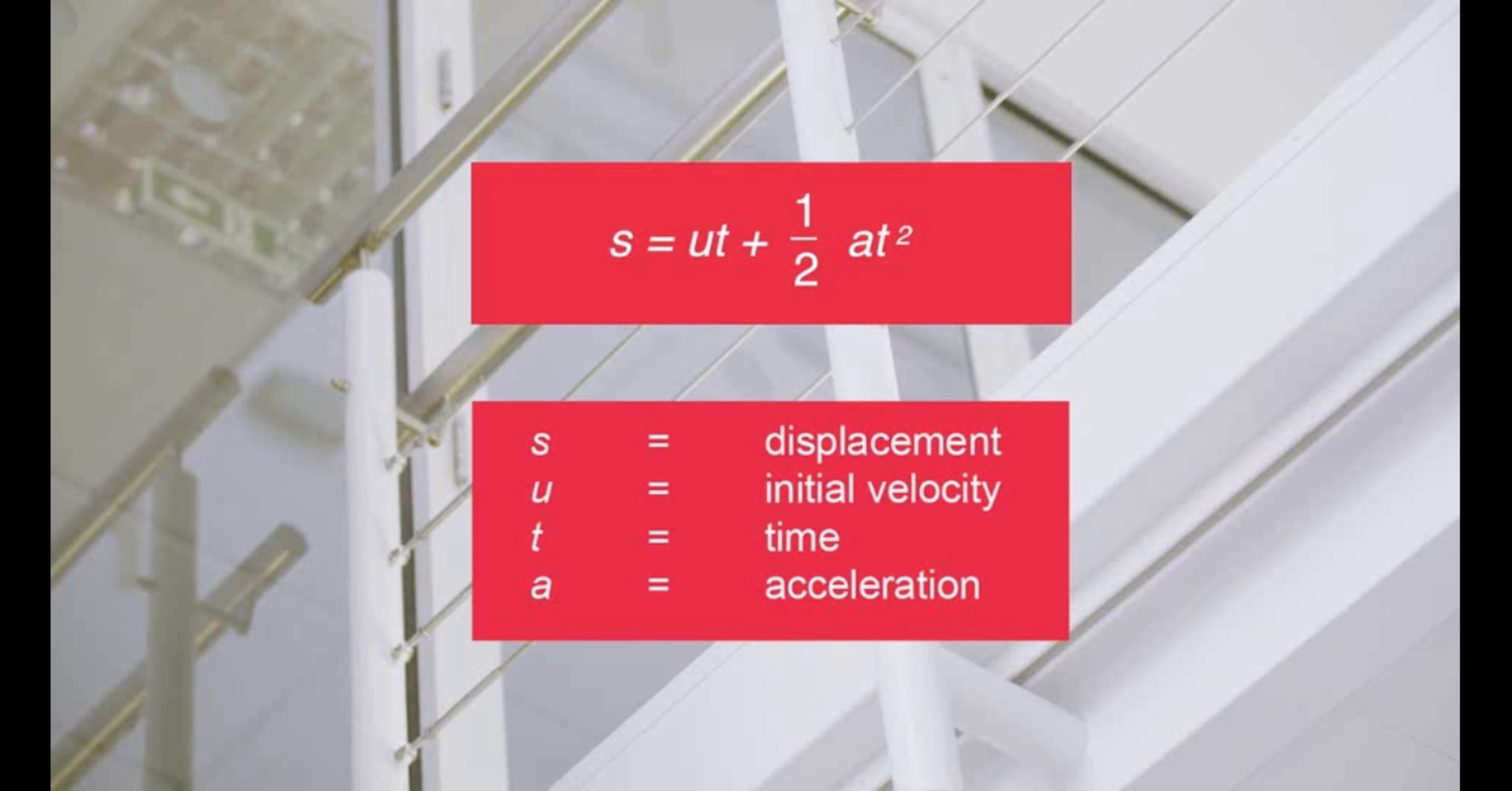Initially, the ball is stationary so u equals 0 and the equation can be expressed as s equals a half at squared. a represents acceleration due to gravity so can be replaced with g.